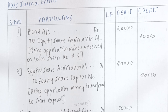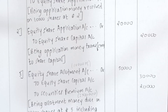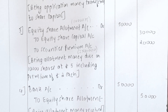Entry 1: Bank Account debit to Equity Share Application Account — 10,000 × Rs. 2 = Rs. 20,000 — being application money received on 10,000 shares at Rs. 2. Entry 2: Equity Share Application Account debit to Equity Share Capital Account — Rs. 20,000 — being application money transferred to share capital account.